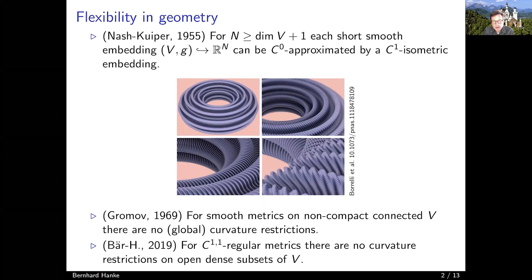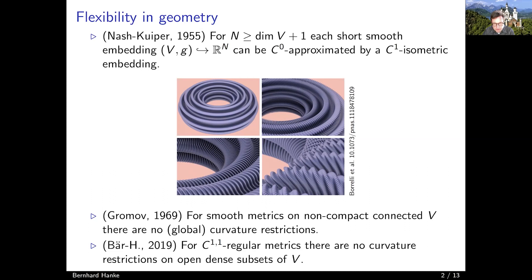We have the Nash-Kuiper result, which says that if you have a short smooth embedding of a Riemannian manifold in Euclidean space of dimension at least one higher, then this can be C^0 approximated by isometric embeddings which are C^1; C^2 or higher regularity is of course not possible. Gromov proved that for non-compact connected manifolds there are no global curvature restrictions — this is the famous h-principle, also an example of a flexibility phenomenon.